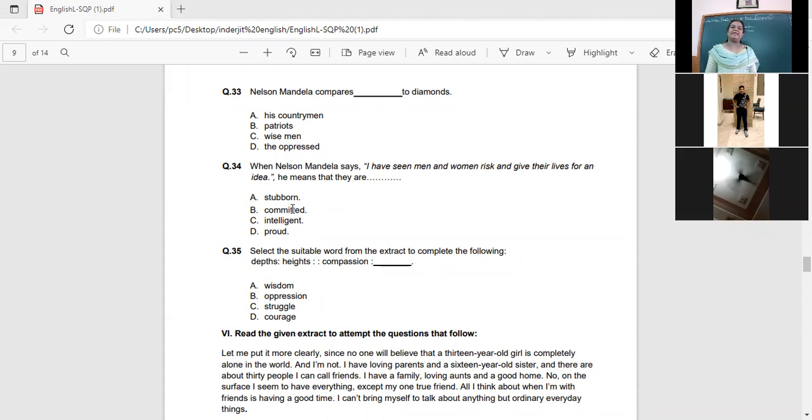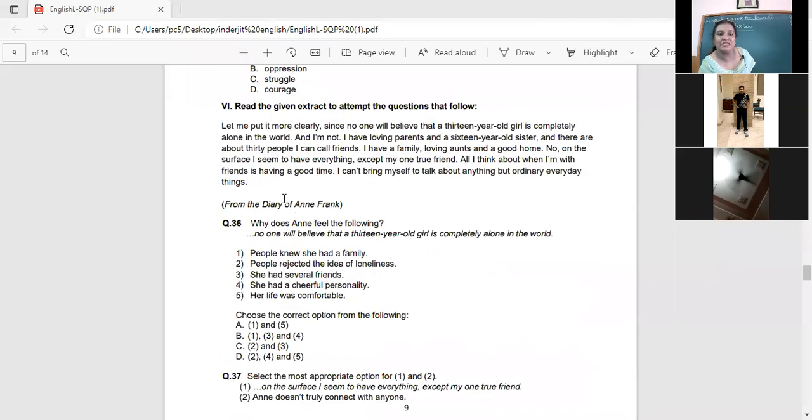Select the suitable word to complete the following. This is very nice. Depth, height, compassion dash. What is the relationship between the two words? First two words, depth and height. They are similar or opposite? Opposite. So which word are we going to find for compassion? The opposite. So what is, compassion is what? Kindness, understanding. What is the opposite of that? Oppression. So find, see, look here, identify the pattern over here. What is the relation between the first two words? And it's a very nice question. These are kind of questions you get from your mental ability also. It's a very nice good question this one.